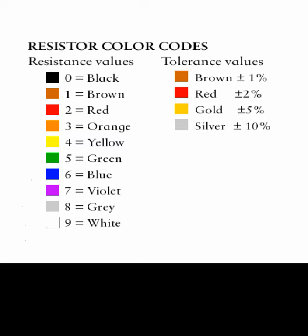It is very important — just note that down. These are the colors and their values. Also, I have given the tolerance values. Brown is ±1%. Red is ±2%. Gold is ±5%. Silver is ±10%.